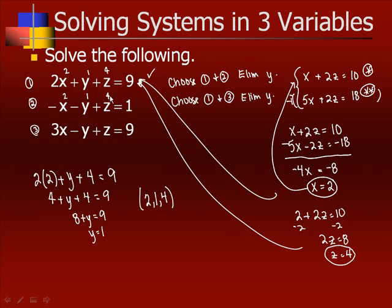If x is 2, y is 1, z is 4: in the second equation, negative 2 minus 1 is negative 3, plus 4 is 1 — it works. In the last equation, 6 minus 1 is 5, plus 4 is 9 — it works. Remember, the solution has to work in all three of the original equations in order to be a valid solution.